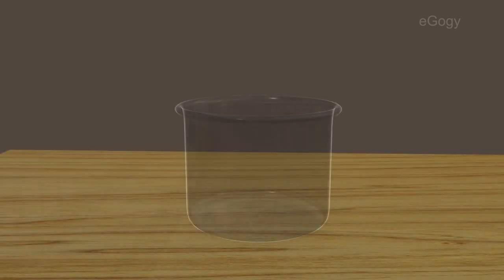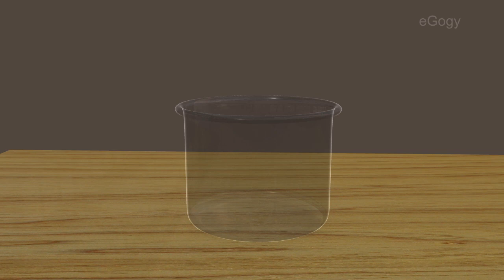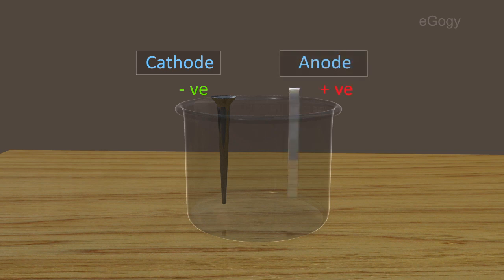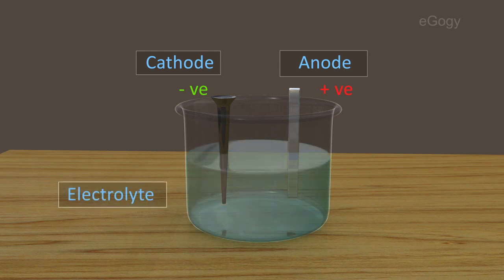Clean the surface of the object which has to be plated and place it as the cathode. The metal rod or sheet of the metal which has to be plated is taken as anode. The salt solution of the metal is taken as the electrolyte.